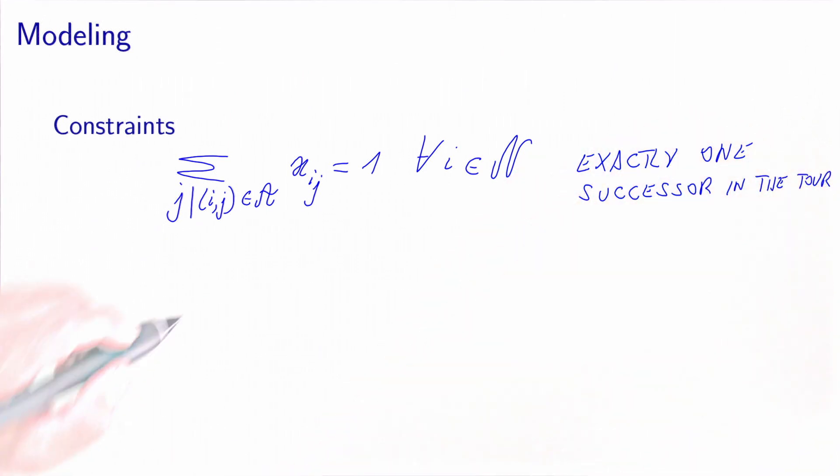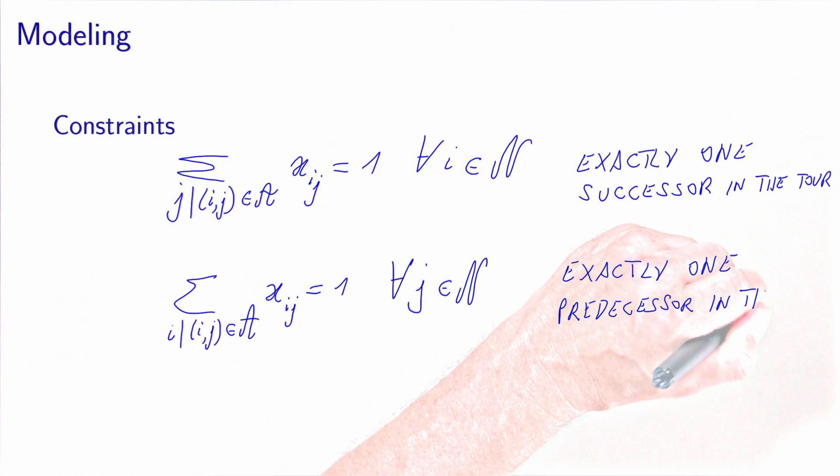Now we need to do the same for the predecessors. We have that the sum over i such that (i,j) belongs to the network of xij is equal to one for all j in n. This means that we need exactly one predecessor for each node. These constraints are linear constraints in the decision variables.